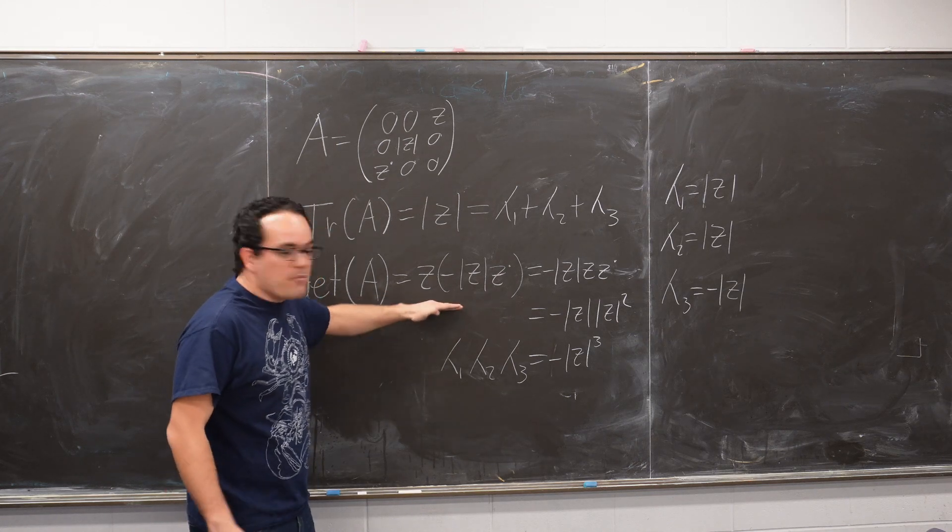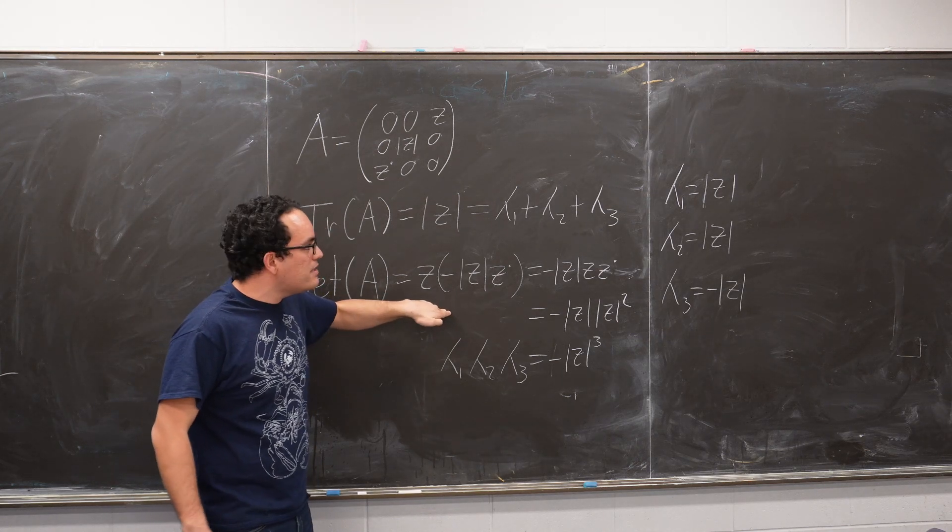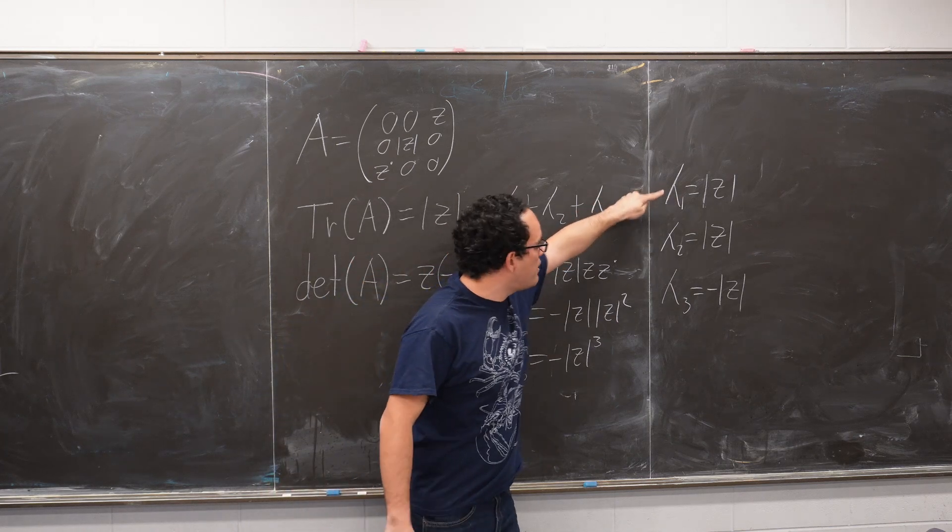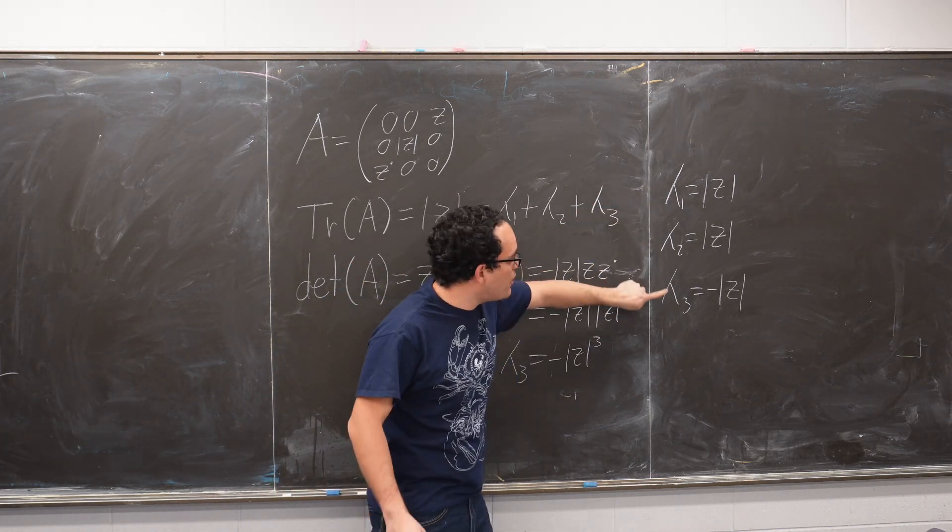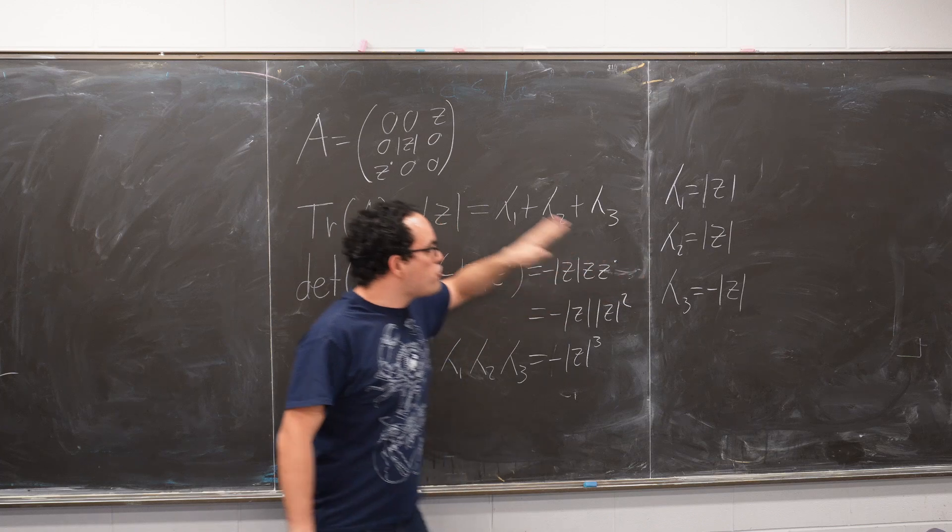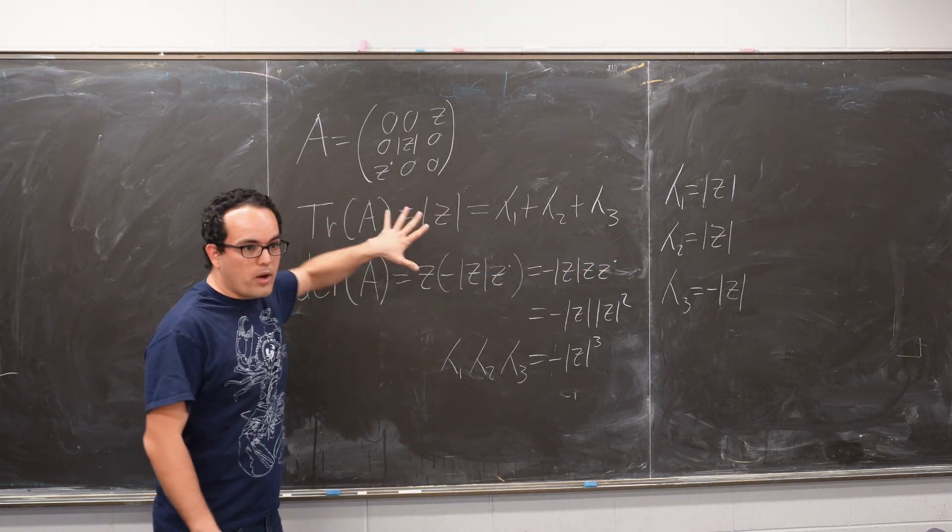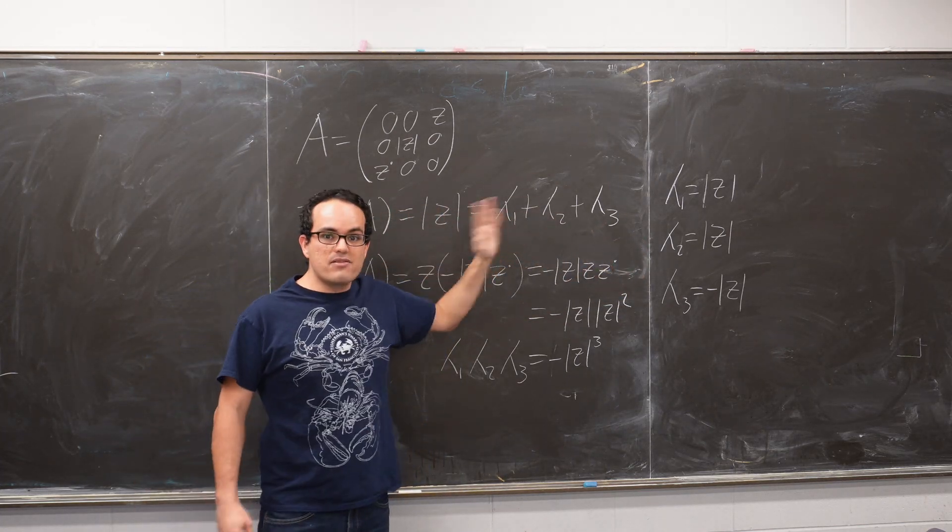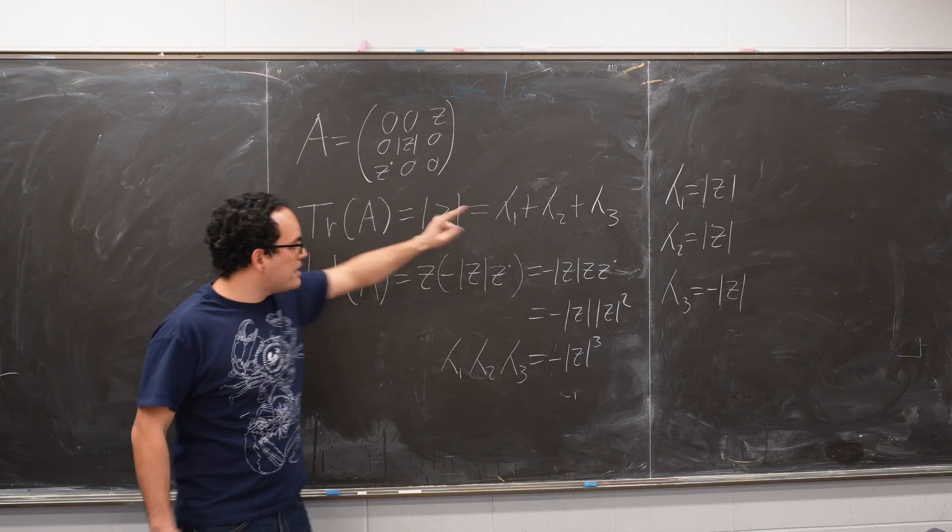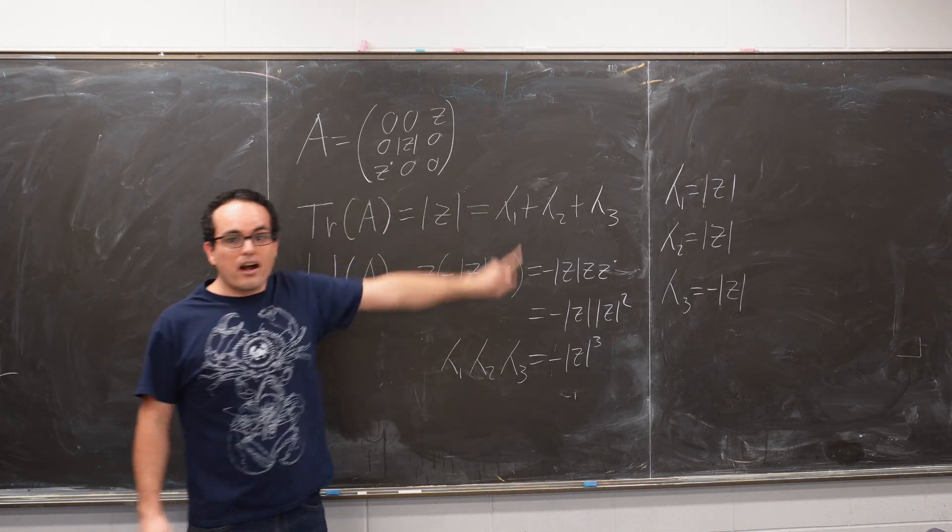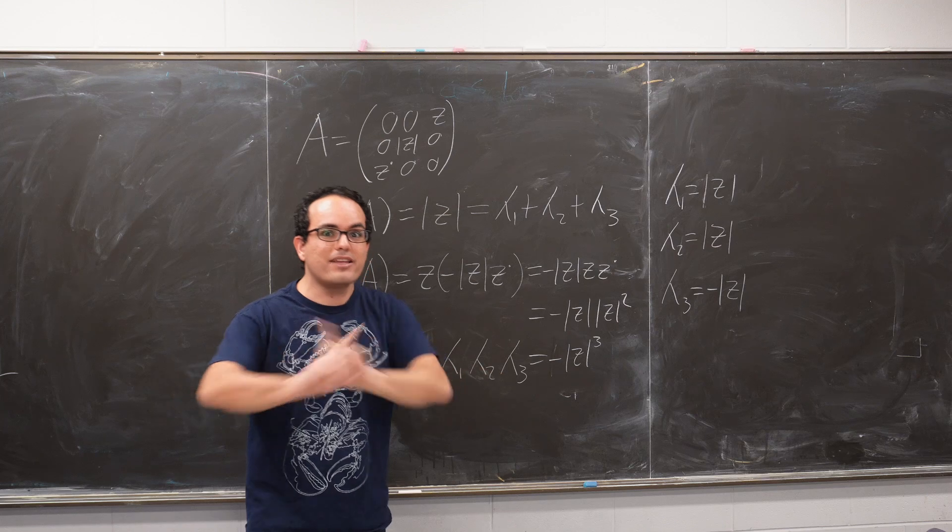The only way this can be true, the only solutions that make sense here is if λ1 is equal to Z, λ2 is also equal to Z, and λ3 is equal to minus Z. Those three numbers make these two equations true, so they are the eigenvalues. If you find numbers that satisfy these two things, they are the eigenvalues. Don't let anyone tell you otherwise.